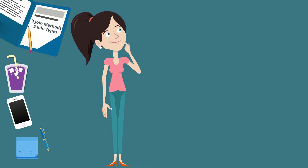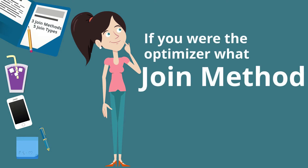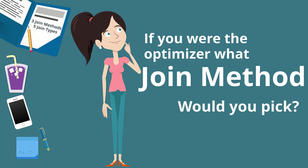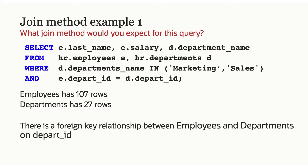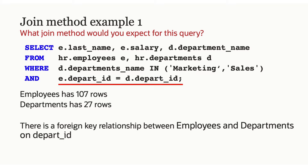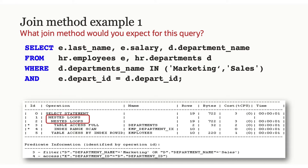So there are three join methods and five join types. Now let's be the optimizer. The first query is a join between employees and the departments table, with a WHERE clause predicate on the department table and a join predicate on department ID. These tables are small — 107 rows for employees, 127 for departments — and there is a foreign key/primary key relationship on that department ID. The optimizer chooses a nested loops join, because we have that easy access path to look up information in the inner table.